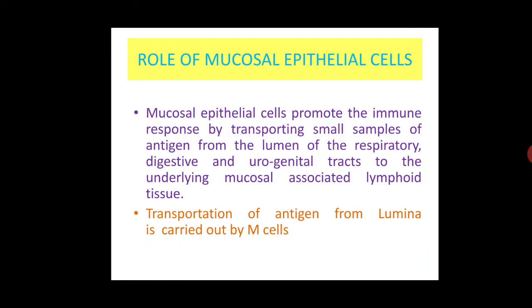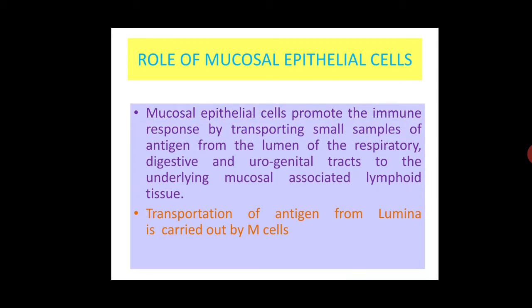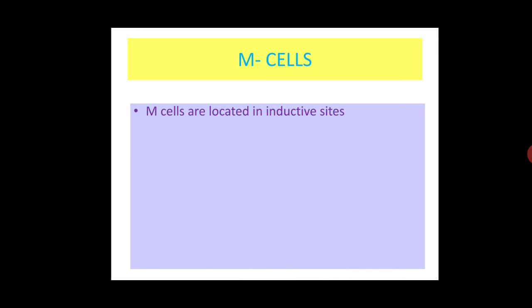The role of mucosal epithelial cells is to promote the immune response by transporting small samples of antigen from the lumen of the respiratory, digestive and urogenital tracts to the underlying mucosal associated lymphoid tissue. This transportation of antigen from the lumen is carried out by M cells.